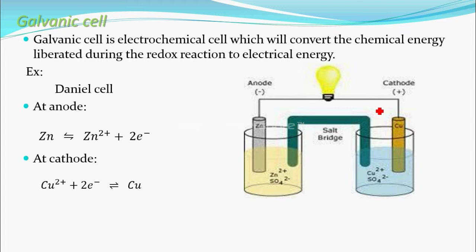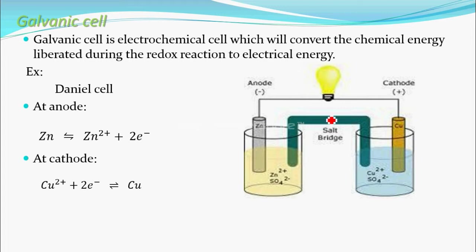The two electrons arriving at the cathode are consumed by the Cu²⁺ ions in the copper sulfate solution. Those Cu²⁺ ions are reduced to form copper metal, which deposits on the copper rod. Since electrons flow through the external circuit, conventional current flows in the opposite direction, causing the bulb to glow.